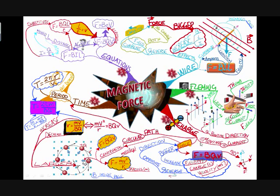When there is a moving charge, we can call it a current. Current moves in the direction in which the positive charge flows. So when there is a negative charge, current flows in the opposite direction. When you want to find the magnetic force, we can use the equation F equals BQV, where B is the magnetic flux density, Q is the charge, and V is the velocity.